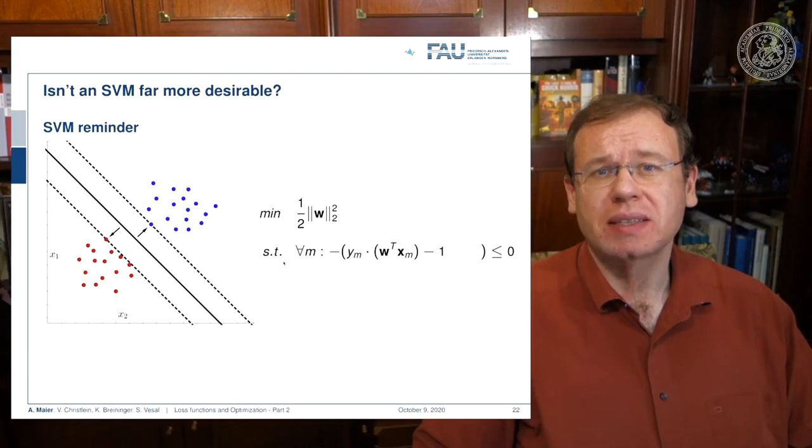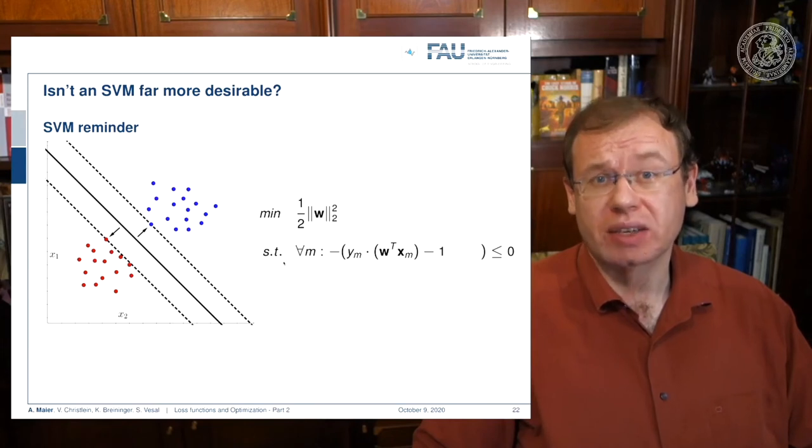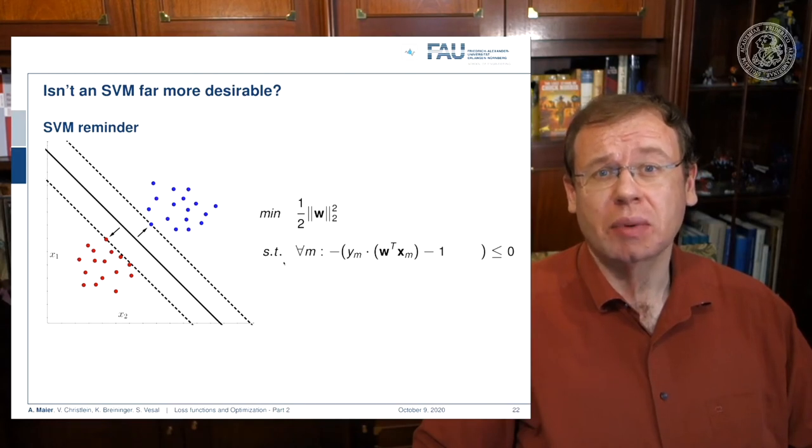So the SVM tries to find the margin that is maximally large while separating those classes. What is done typically is that you find this minimization problem where w is the normal vector of our hyperplane. We then minimize the magnitude of the normal vector. Note that this normal vector is not scaled, which means that if you increase the magnitude of w, your normal vector gets longer. If you want to compute sine distances from that, you typically divide by the magnitude of the normal vector. So this means that if you increase the length of this normal vector, your distances get smaller.